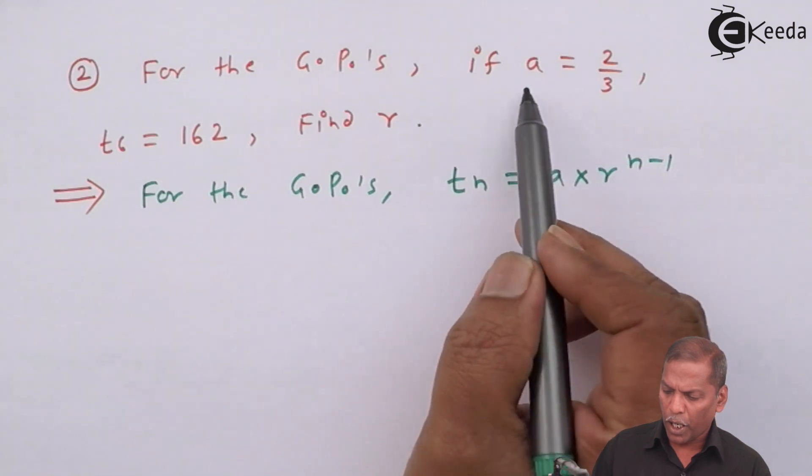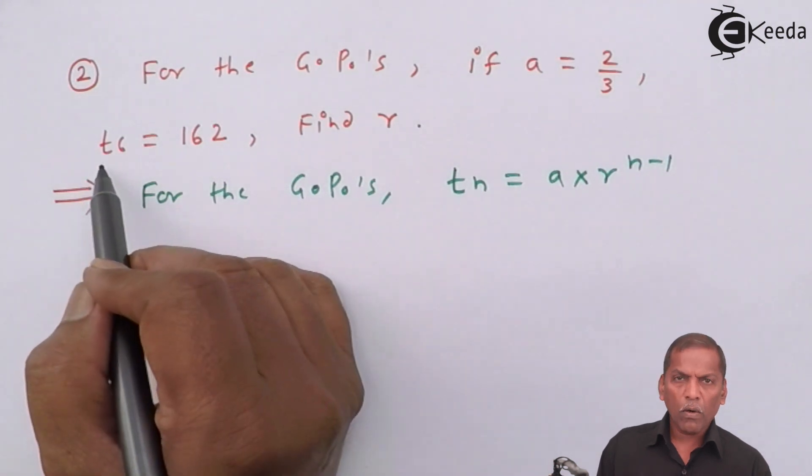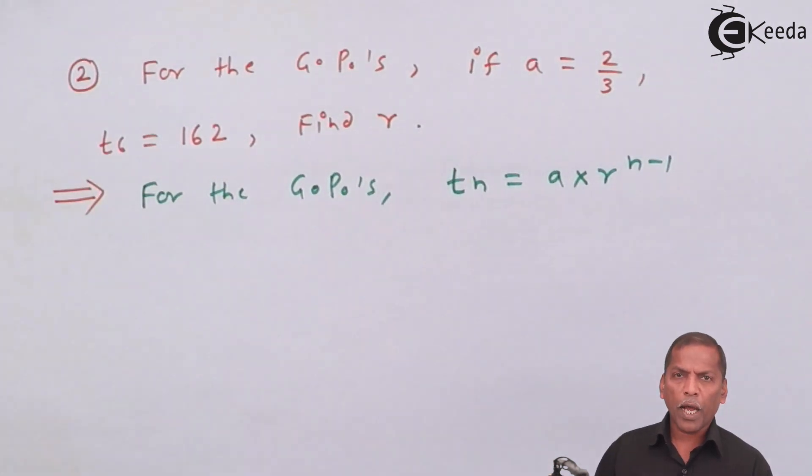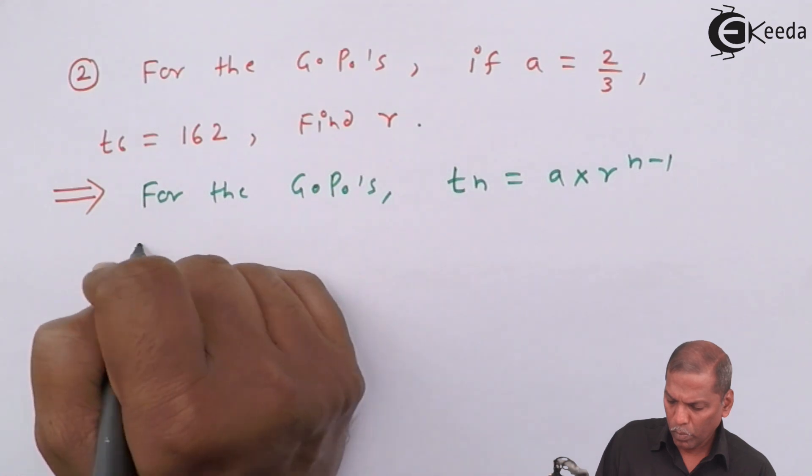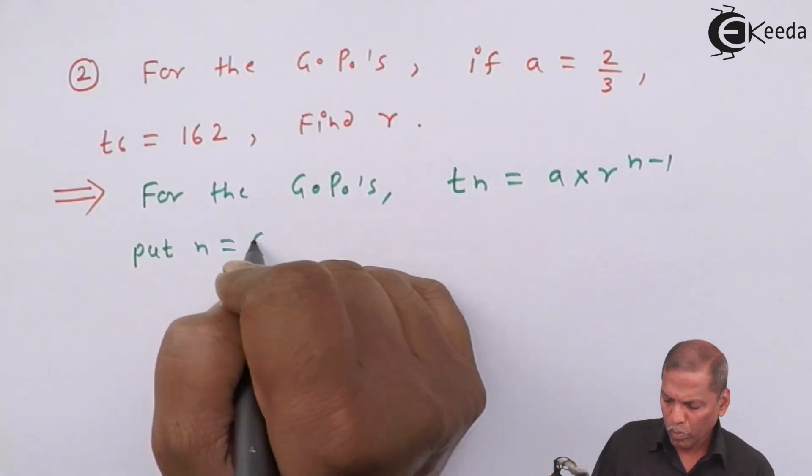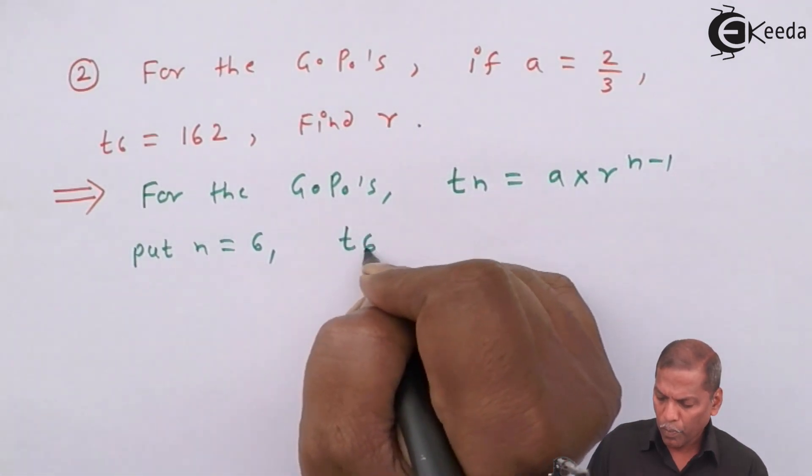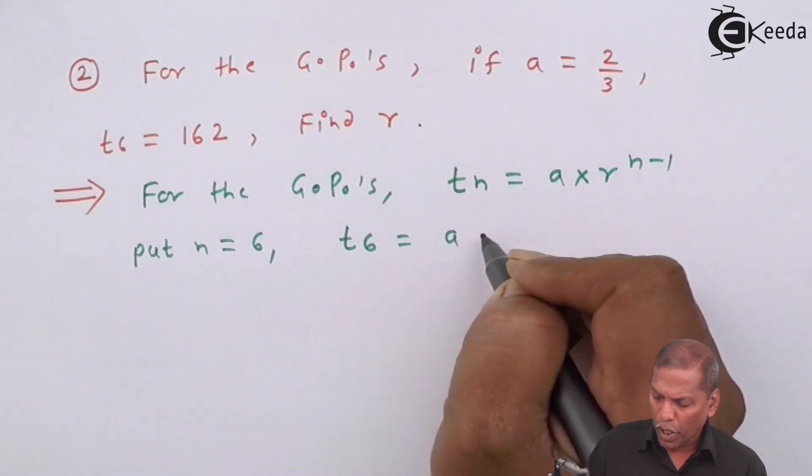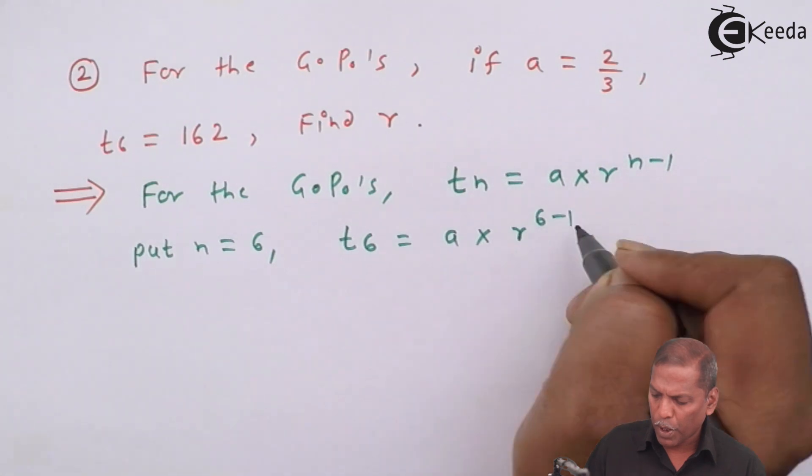We have to substitute A equals 2 by 3, then for T6, we have to put n equals 6.